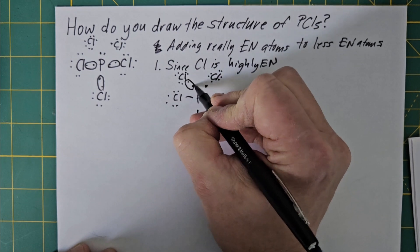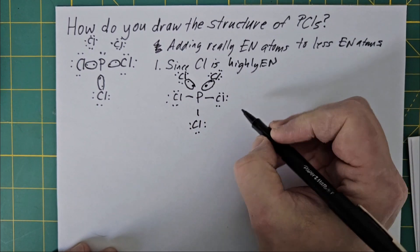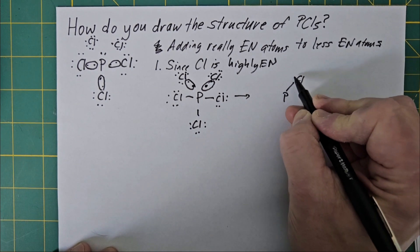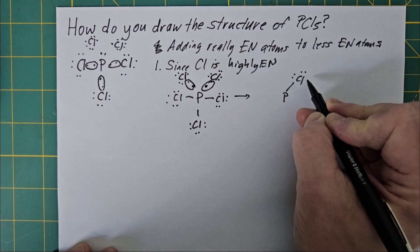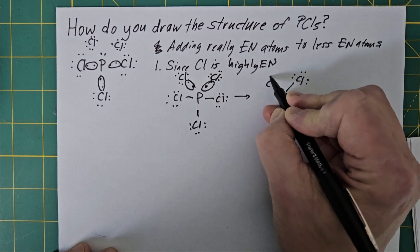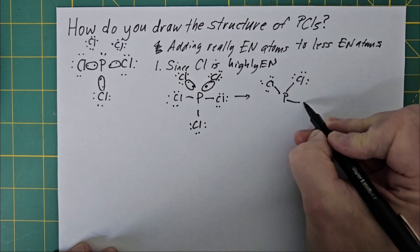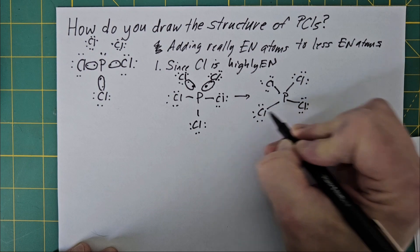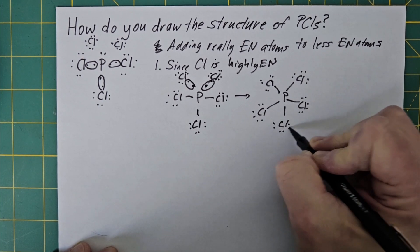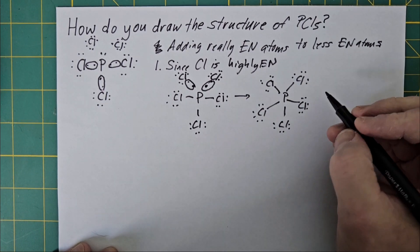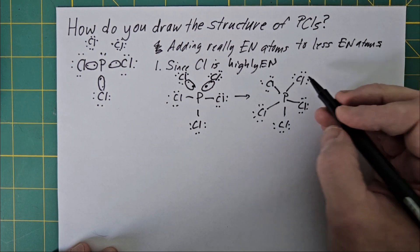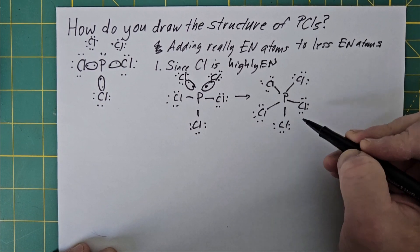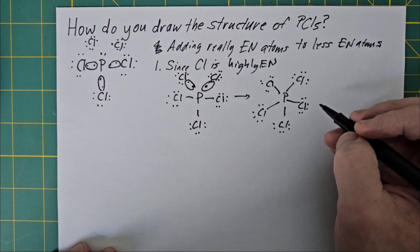Then you could share like normal, and you would have a cleaned up structure that would look something like this. And if you look up a Google search on phosphorus pentachloride PCl5, more than likely this is going to be what you're going to see as the structure for phosphorus pentachloride.